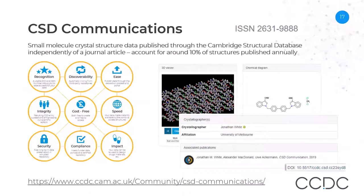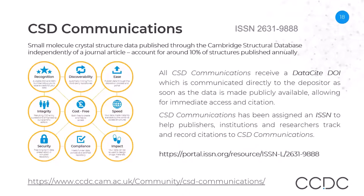Not every crystal structure is associated with an article. We provide a means for people to communicate structures they might not have otherwise published, known as CSD Communications. The idea is that researchers can get credit for their work and it becomes discoverable, whereas otherwise it might not be found. Today, CSD Communications account for around 10% of structures published annually. As well as a DataCite DOI communicated to the depositor so they can cite their crystal structure, we also assign an ISSN, which was felt desirable by the wider community to help track and record citations through CSD Communications.